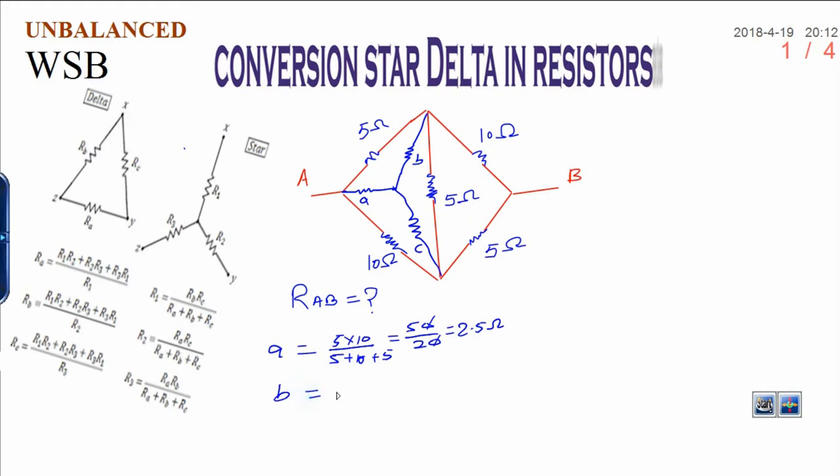Similarly, you have to calculate B by star-delta conversion. B, adjacent resistors are 5 and 5. That is why 5 times 5 divided by, again total is same, that is 20. And finally you get 25 upon 20, which is equal to 5 upon 4.